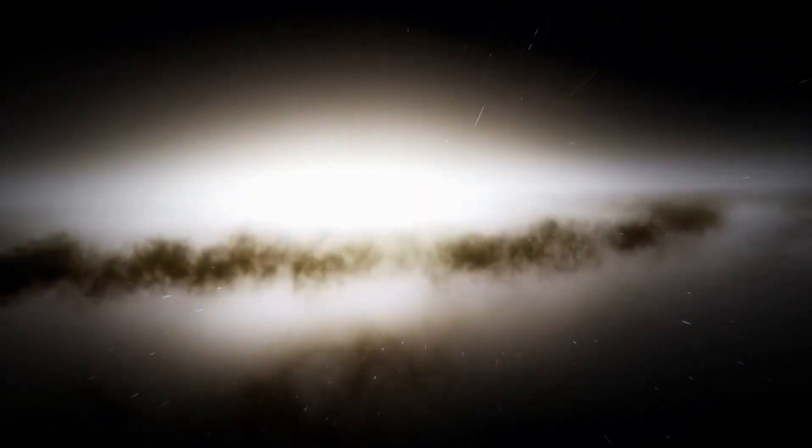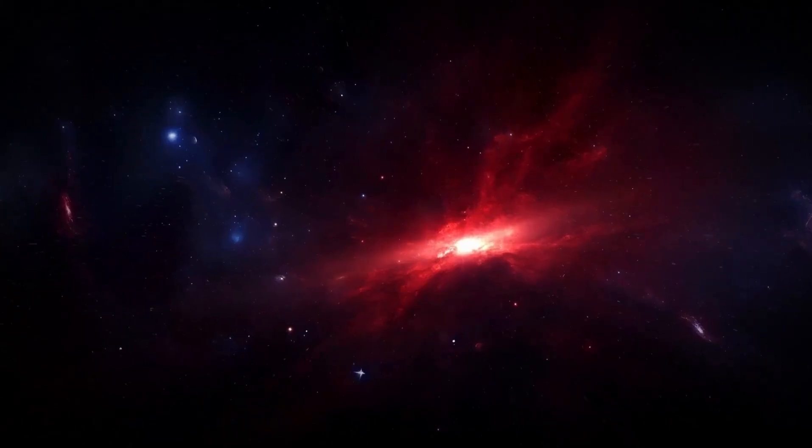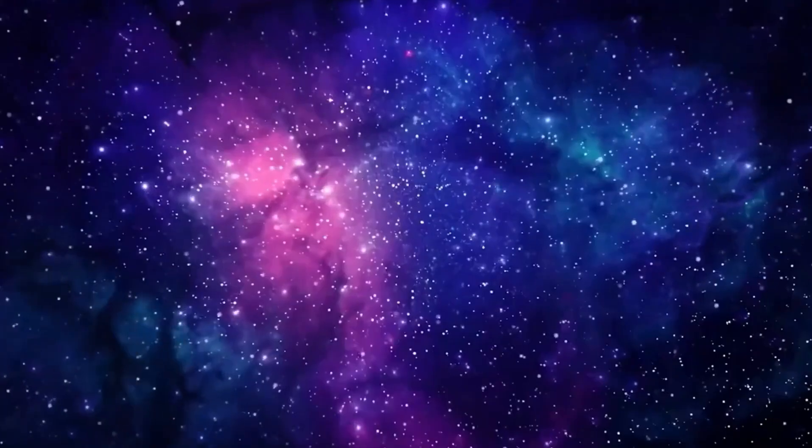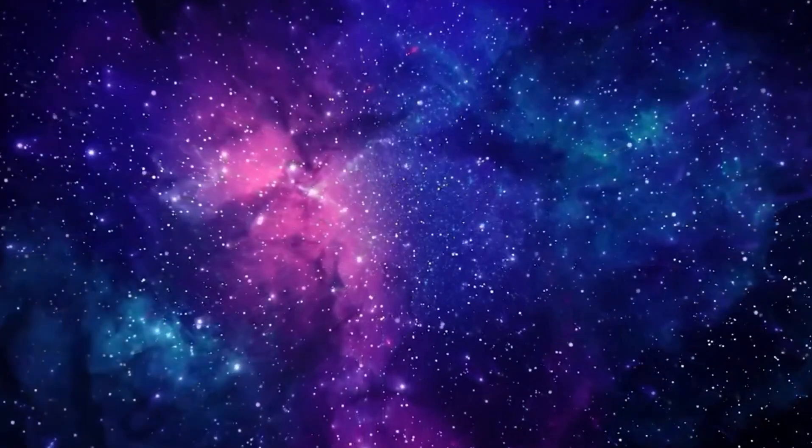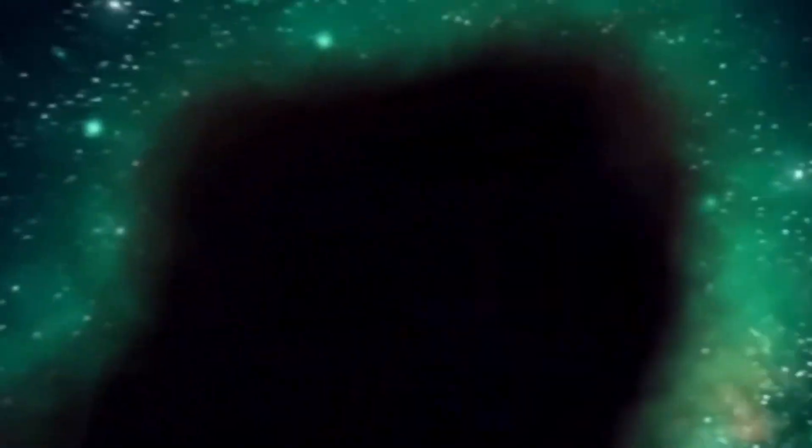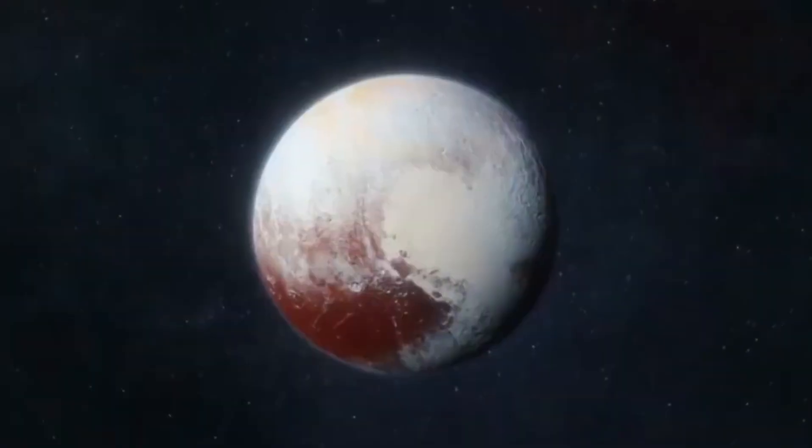The Voyager probes stand out for their meticulous design and robust systems, featuring a rotation rate over 15 times slower than the hour hand of a clock. This engineering minimized visual blurring while capturing images and data during their high-speed journey through space. Their astonishing imaging capabilities amazed scientists and the public alike.